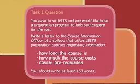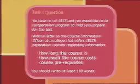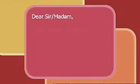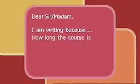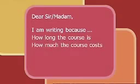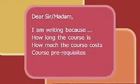The way the question is constructed tells you how to organise your letter. There are three bullet points: how long the course is, how much the course costs, and course prerequisites. This tells you that you should construct three body paragraphs, one for each bullet point. Thus, your letter should look something like this: first, a greeting — 'Dear Sir or Madam'; then an introduction stating a purpose — 'I am writing because'; then the body: one, how long the course is; two, how much the course costs; three, course prerequisites; and then finally, the closing — 'Yours sincerely.'